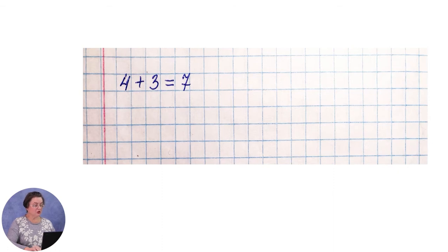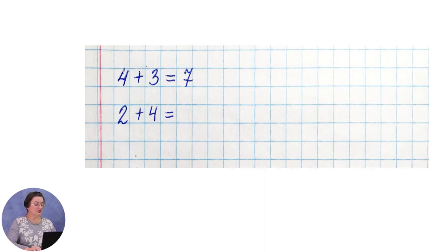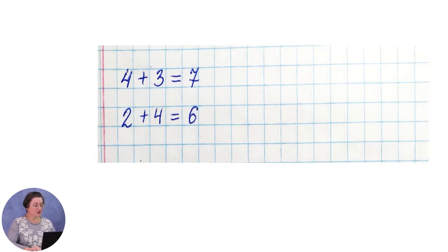Ниже, через одну клетку, пишем следующий пример: 2 плюс 4. Обращаем внимание: какое арифметическое действие? Верно — сложение. Вспоминаем состав числа. 4 и 2 — это 6. Значит, ответ в примере 6.